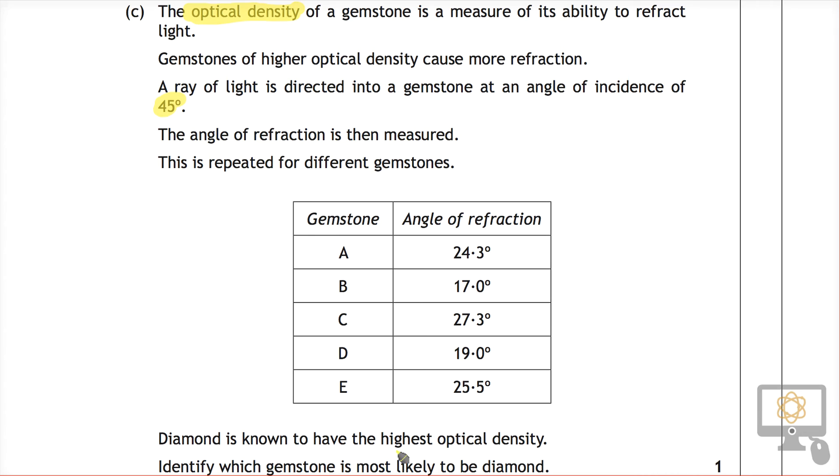It says that diamond is known to have the highest optical density. Identify which gemstone is most likely to be diamond. Well, if it has the highest optical density that means that it bends the most. It's the ability to refract light, so it slows down the most and it bends the most.